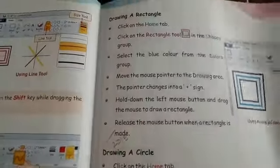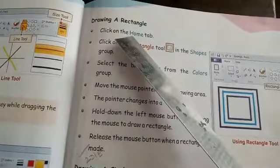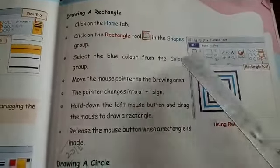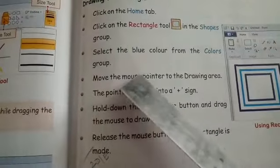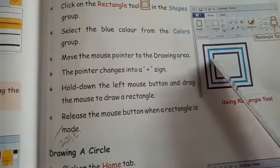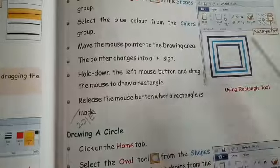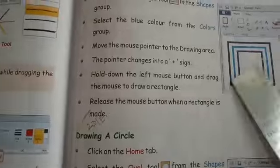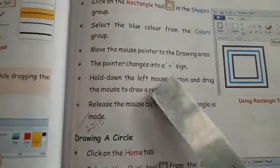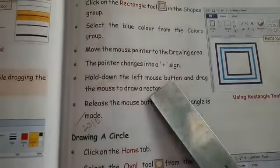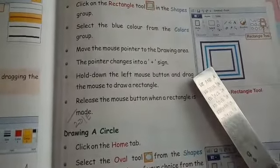Drawing a rectangle. You have to go to the home tab and click on the rectangle tool in the shapes group, then select the blue color from the color group. Move the mouse pointer to the drawing area. When you start moving your mouse, your pointer will change into a plus sign. Then hold down the left mouse button and drag the mouse to draw a rectangle. Release the mouse button when done.